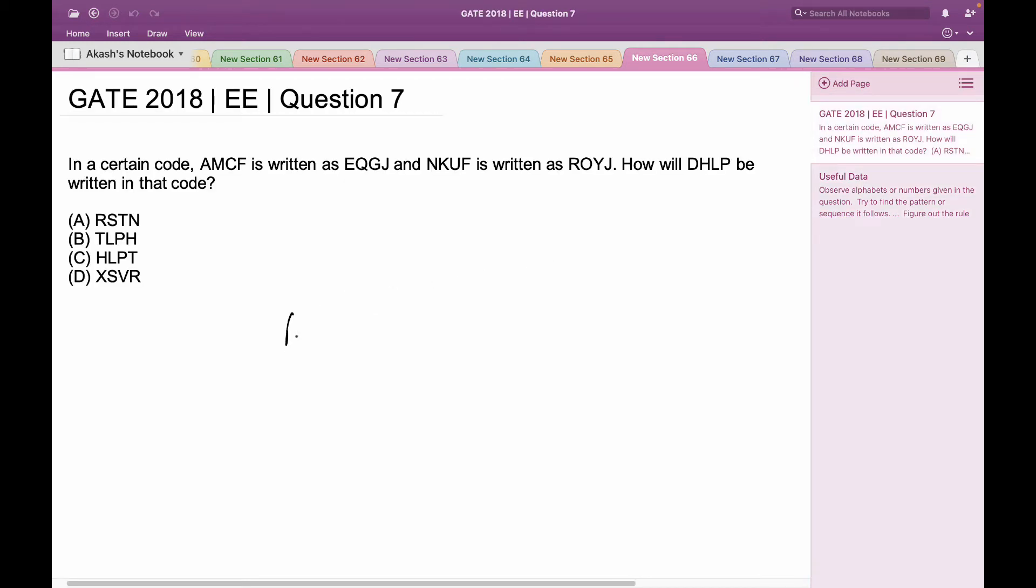Here the code AMCF corresponds to EQGJ. Now if I look at the code and what it yields, the first observation is that the number of alphabets that needs to be added to A to get E would be 4. Also the number of characters that needs to be added after M to get Q would be 4, after C to get G would be 4, the same thing with F.